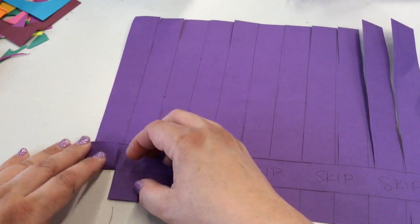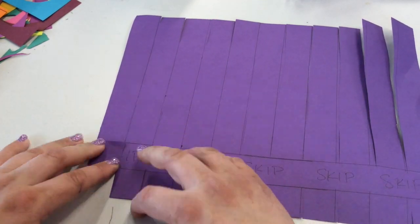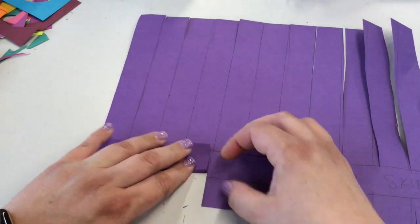Fold each of those little pieces into a tab all the way across. Don't do anything with the longer pieces just yet.